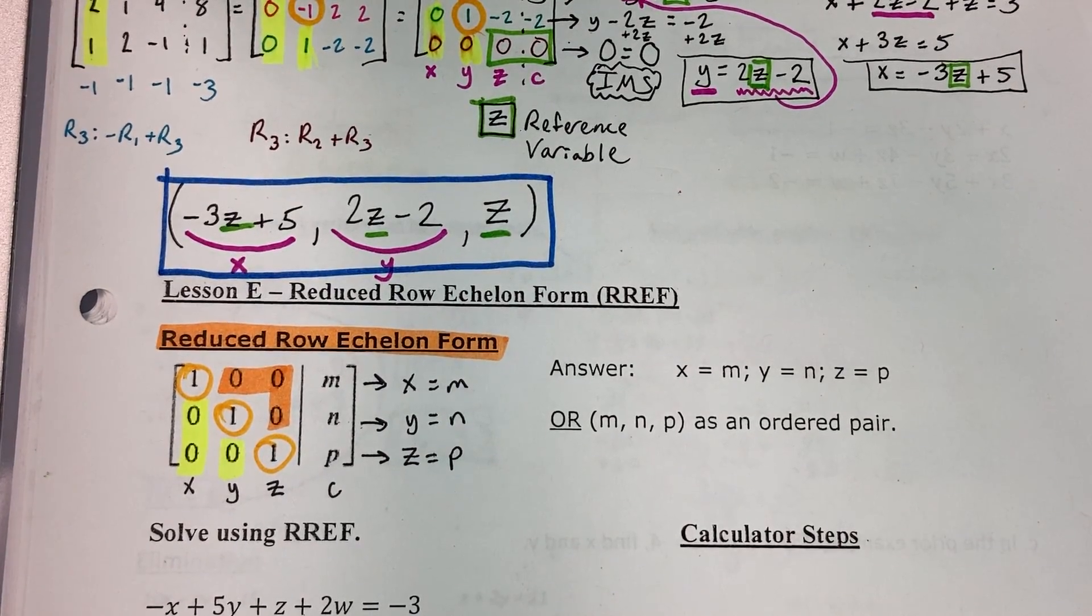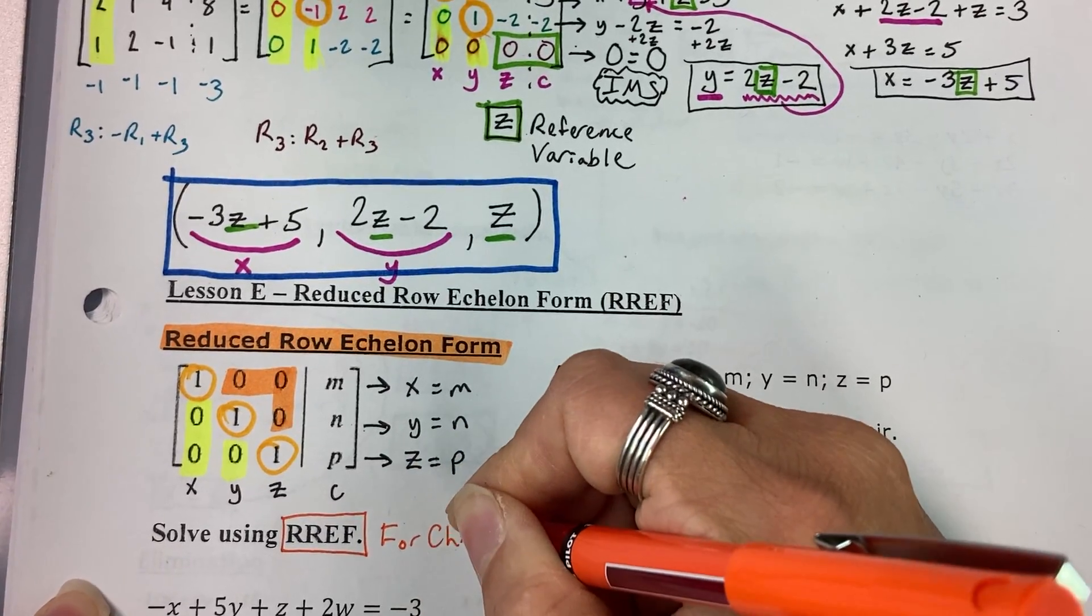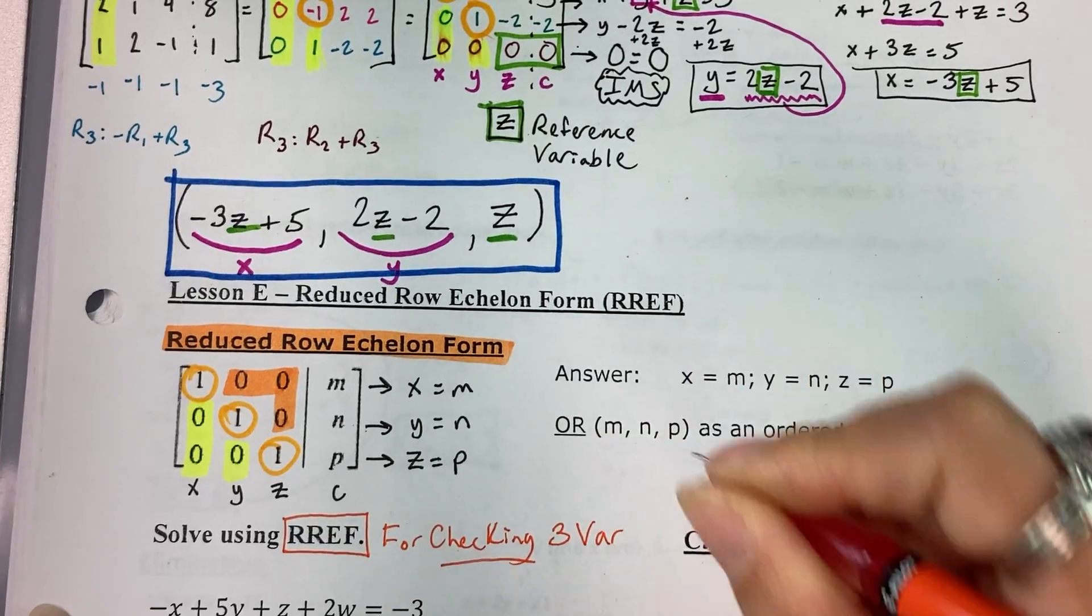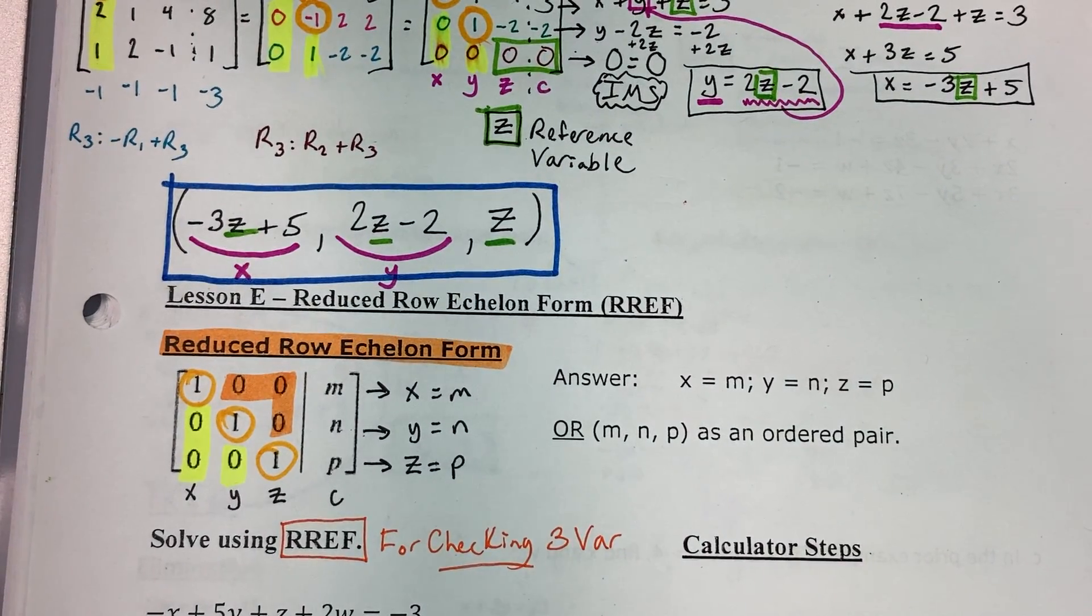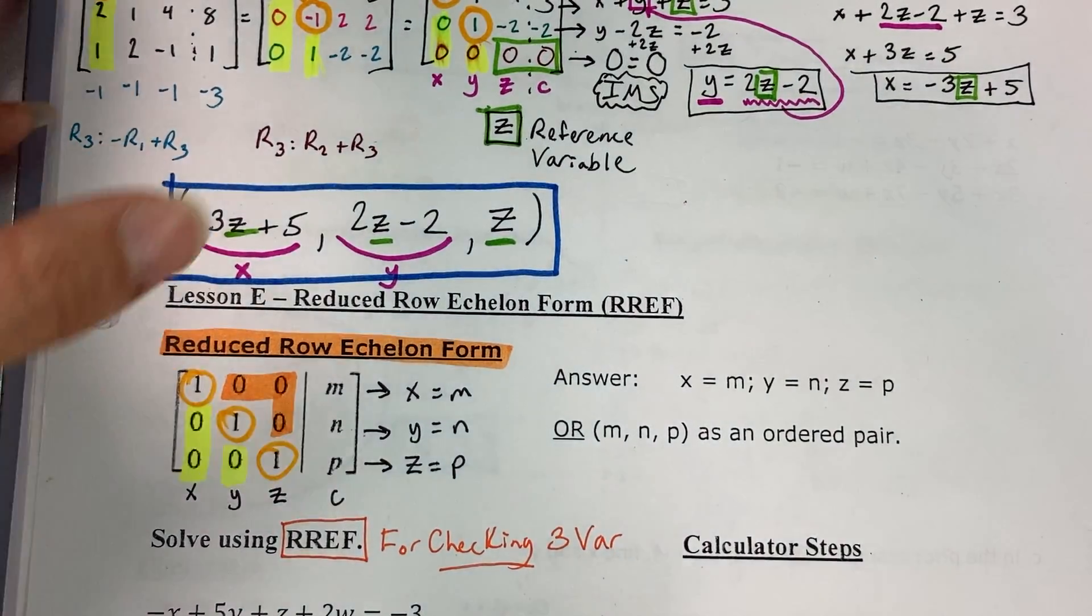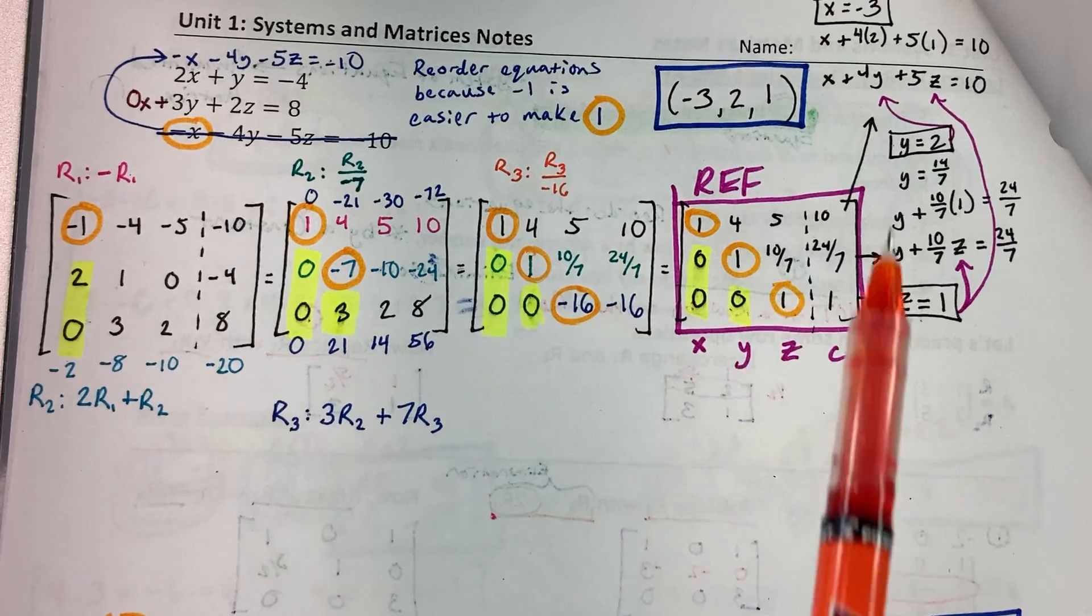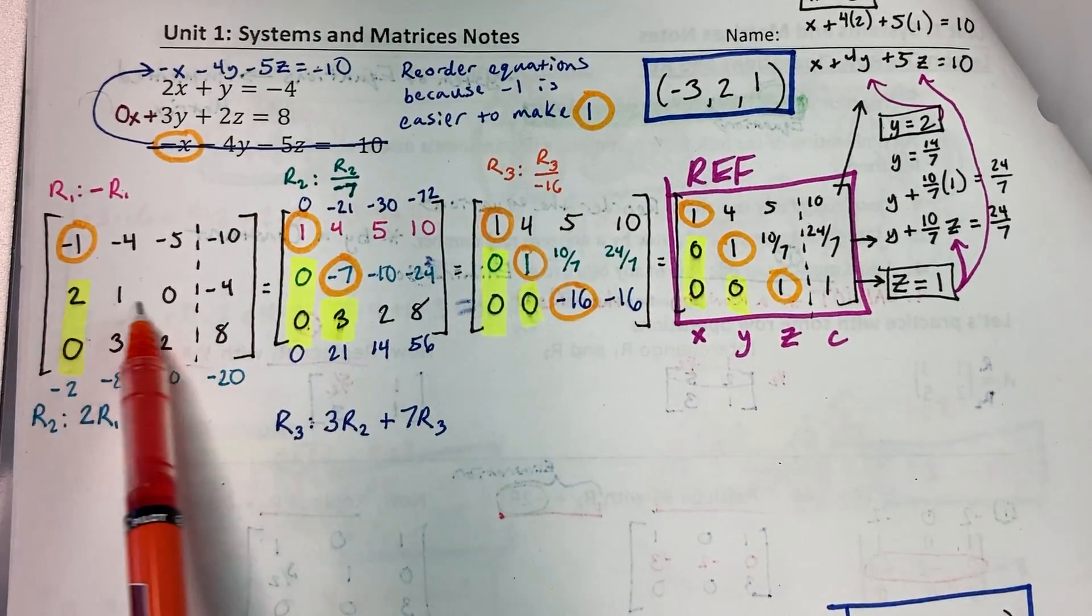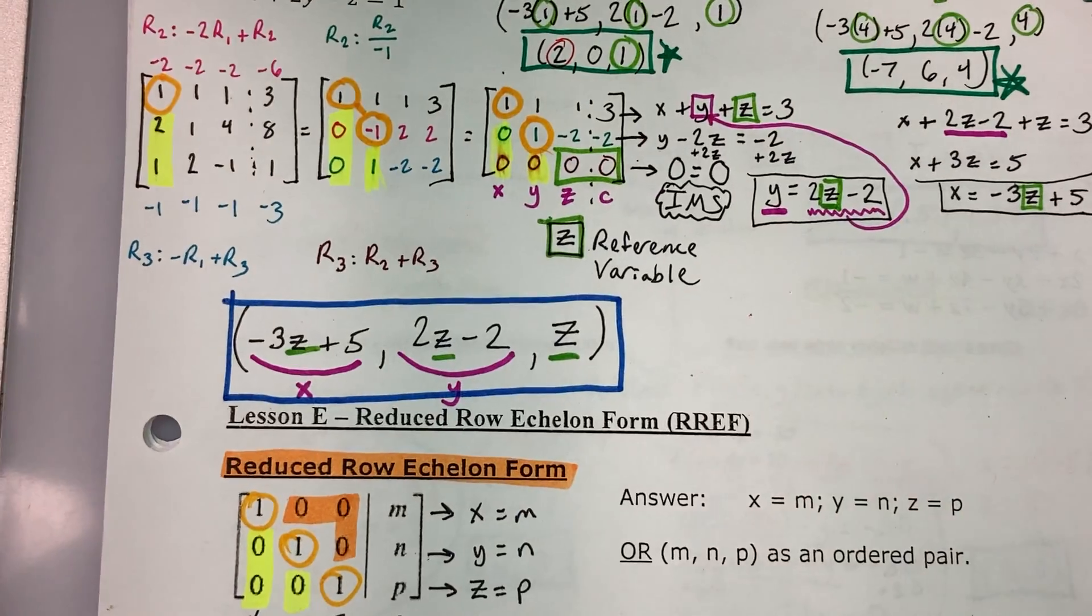Now, what I want you to write about reduced row echelon form is that this is strictly for checking three variable systems. So I'm still going to make you show all of our row echelon form work by hand, but you can use it as a means of checking. So for example, on these previous pages, you could use reduced row echelon form on your calculator to check your final answer, but I'm still going to need to see all your row steps, all your row operations, and your row echelon form matrix.